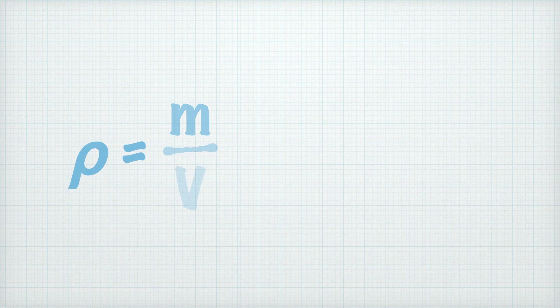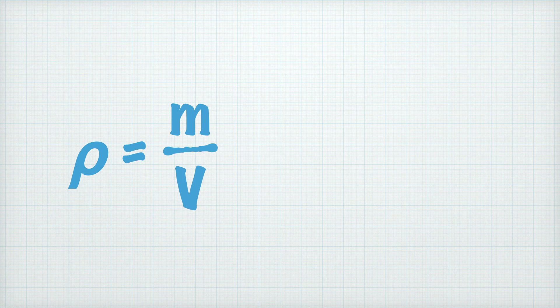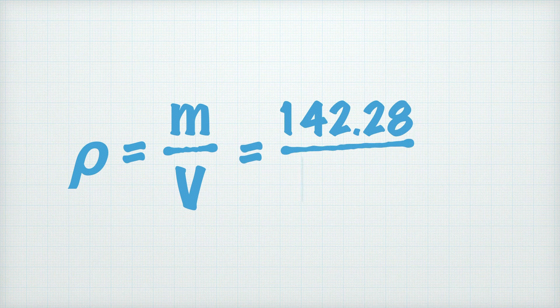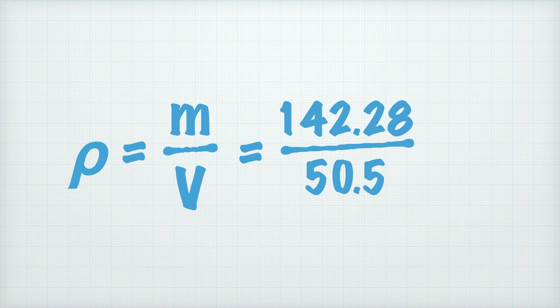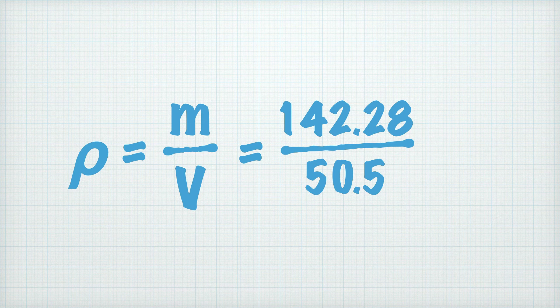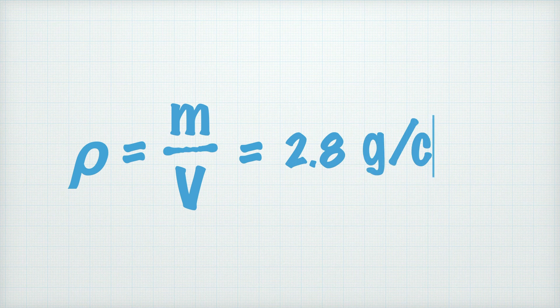So now it's back to our equation, and we can enter our measurements of mass and volume like so. That means the density of the stone is 142.28 divided by 50.5, which is 2.8 grams per cubic centimeter.